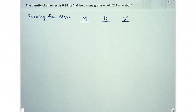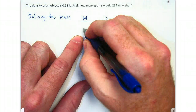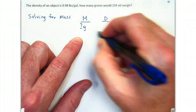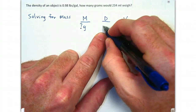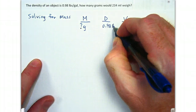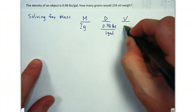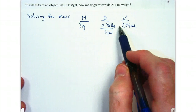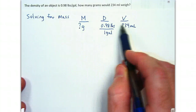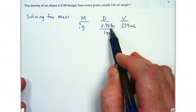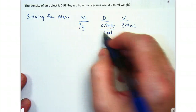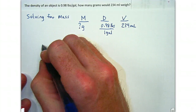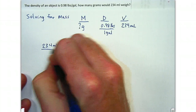The next problem is solving for mass. It states: the density of an object is 0.98 pounds per gallon — how many grams would 234 milliliters weigh? The given mass is an unknown number of grams — that's what we're solving for. The given density is 0.98 pounds per gallon and the volume is 234 milliliters. When solving for mass or volume, take the one that is given and put it over 1, then use that to transition through density to get to the unknown. The given here is volume, so we put 234 milliliters over 1.